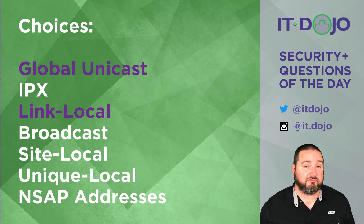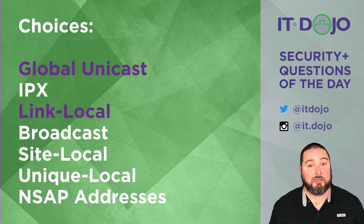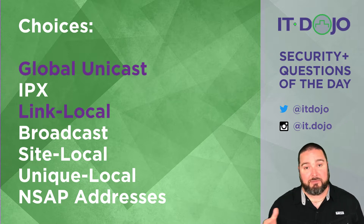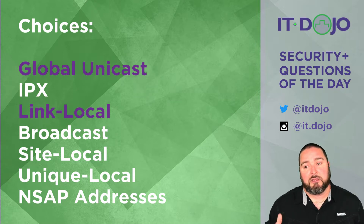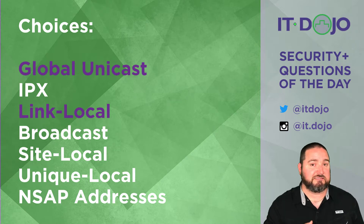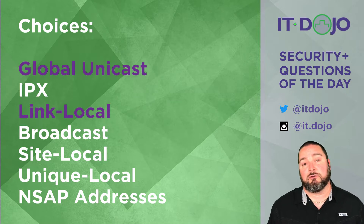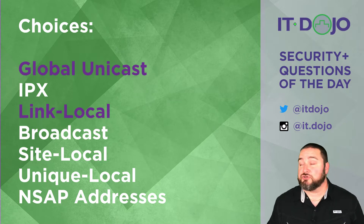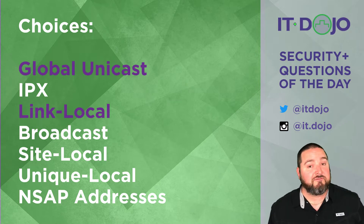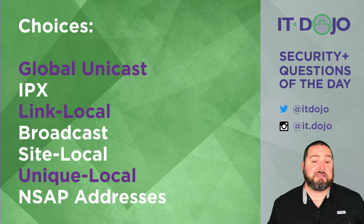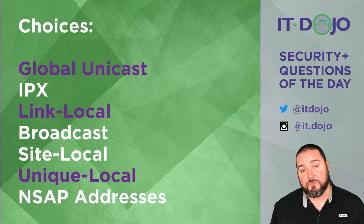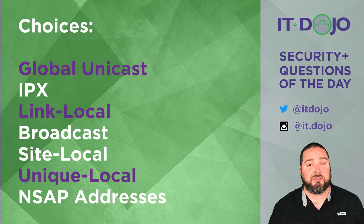The next answer that might confuse you if you've been around IPv6 a long time is site local IPv6 addresses. Site local addresses used to be a valid IPv6 address type, but they were ultimately deprecated — they couldn't figure out the best way to implement it, so it was abandoned. It may still appear in some texts or Google results on IPv6 addresses, but site local is no longer considered a valid IPv6 address type. Next is unique local addresses, which is absolutely a valid IPv6 address type and one of the correct answers. These have a base prefix of FC00::/7.